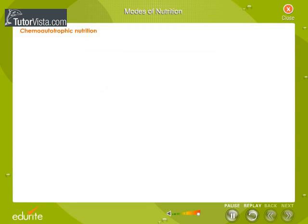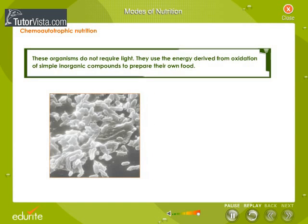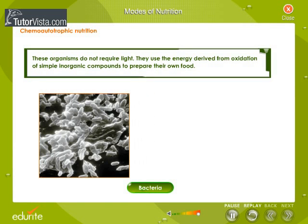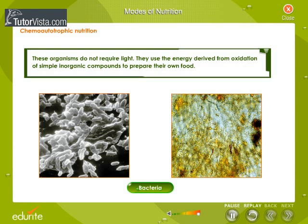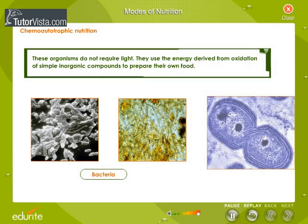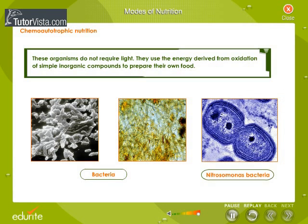Chemo autotrophs, as the name suggests, do not require light. They manufacture their food from inorganic substances in the presence of energy derived from oxidation of simple inorganic compounds of iron, sulfur, etc. An example is Nitrosomonas bacteria.